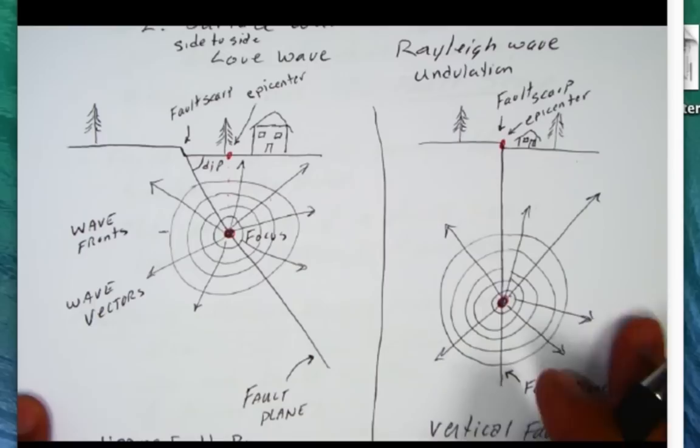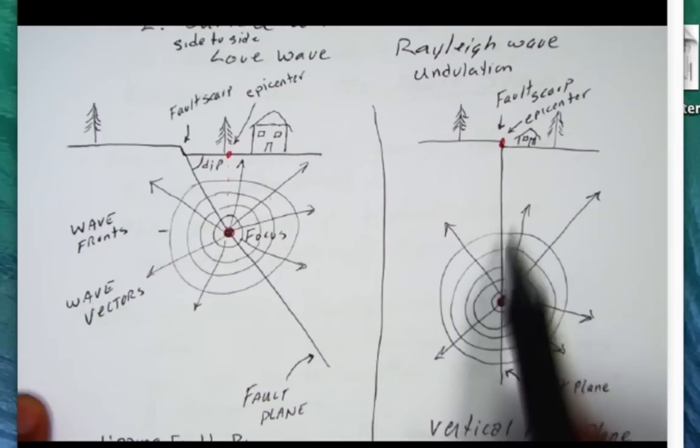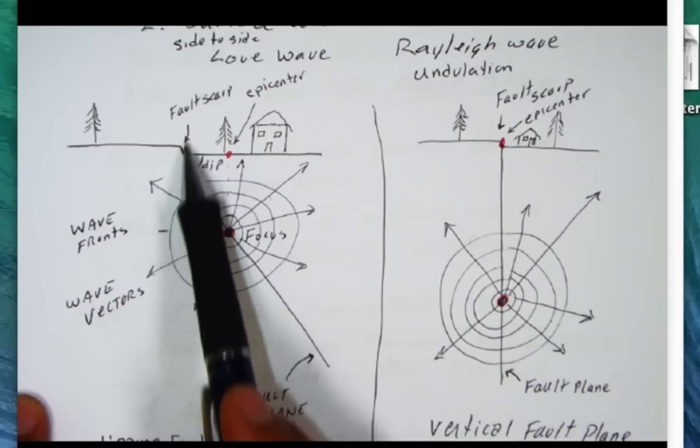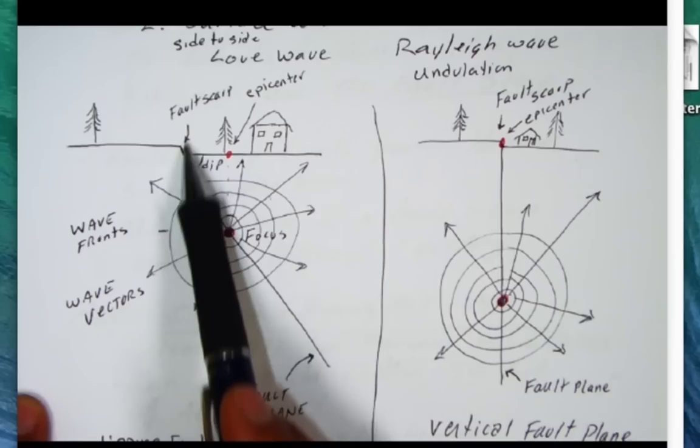Another question I have is on fault planes. Some fault planes dip at a steep angle here, maybe like 70 degrees. Other fault planes are vertical. Some important features to note here. Here is a surface. I got some trees and the house here.